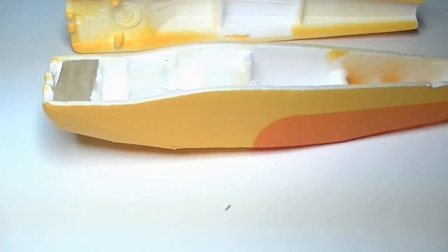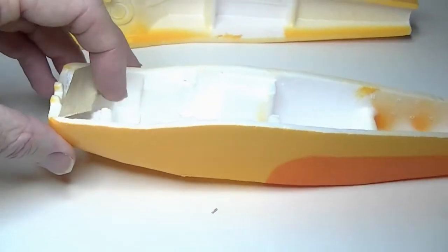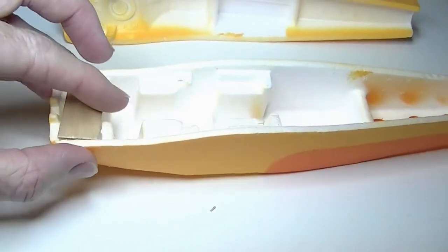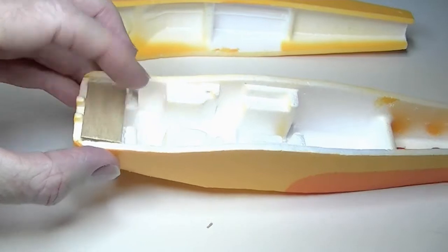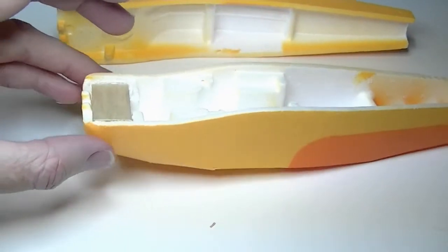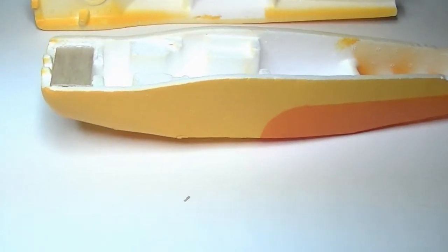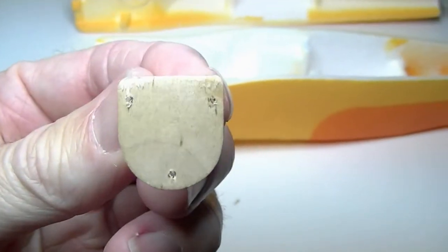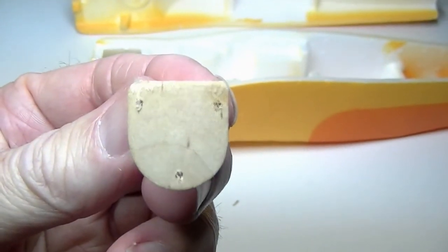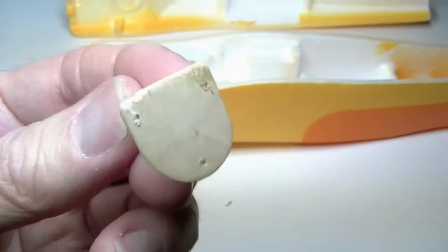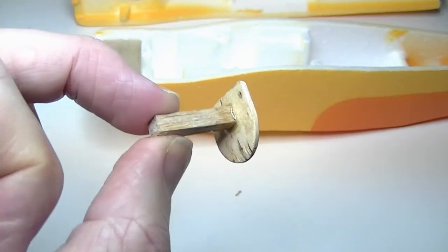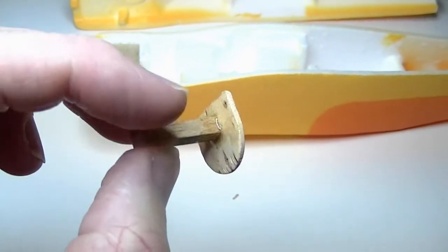I'm going to glue a little piece of tongue depressor in here like that. Then I've made this motor mount which I pre-drilled with three holes out of a piece of tongue depressor. I've epoxied a little piece of balsa wood to the back of it.